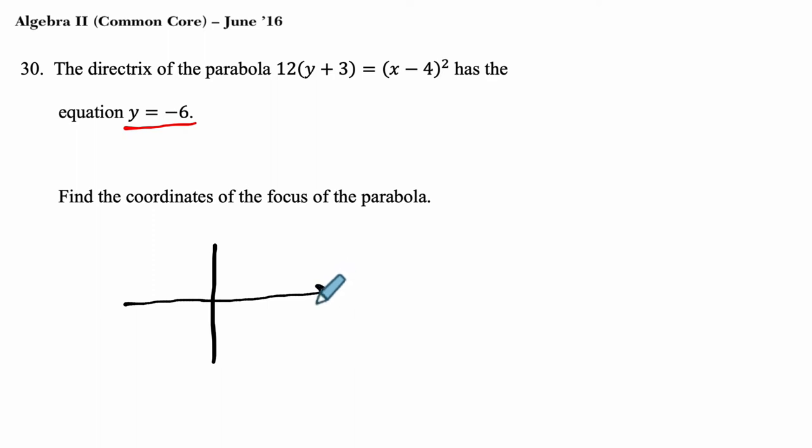Here's my graph. And we have our directrix at y equals negative 6. It's a horizontal line down here. At y equals negative 6.